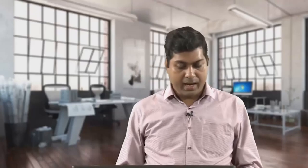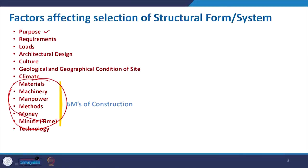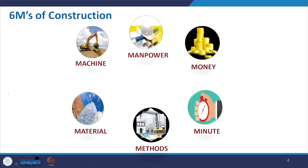I suggest you extend that list so that understanding of this particular lecture will be much clearer. One very interesting thing here is that materials, machinery, manpower, methods, money, and minutes are basically considered as the 6 M's of construction management — very important aspects to deciding how a structure will be built. Let us move to these 6 M's of construction.